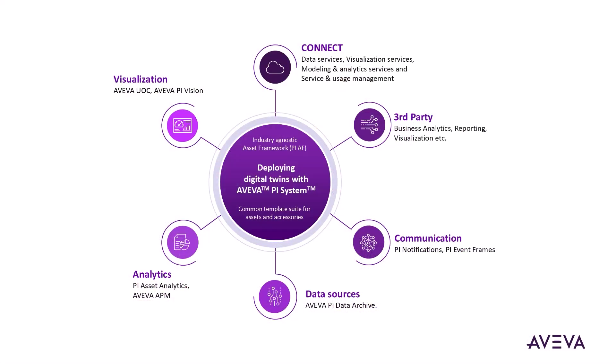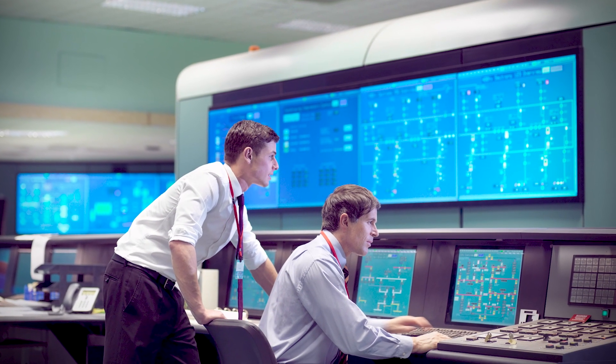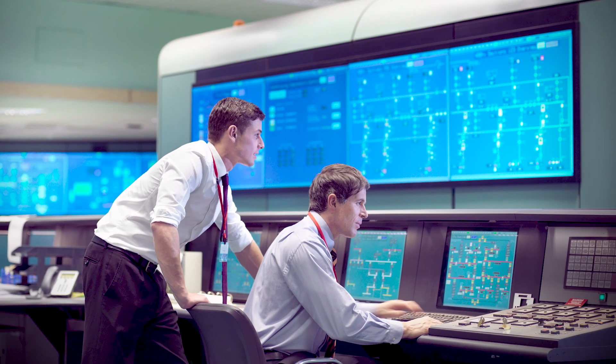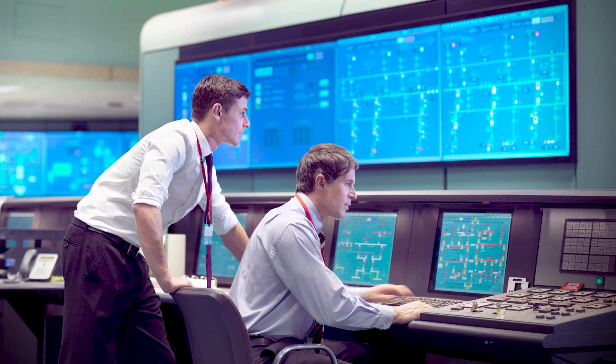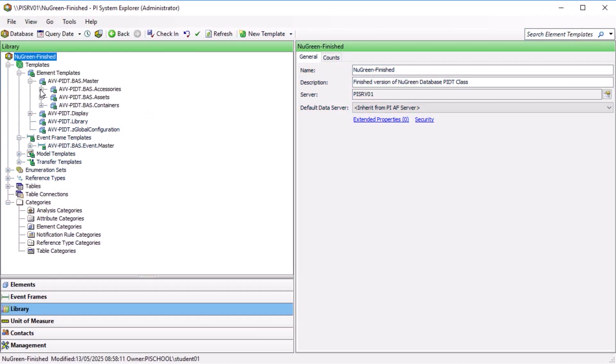But what exactly is it? Aviva Digital Twin for Pi is a digital representation of your physical equipment, built to reflect the unique behavior of each asset. It enables your teams to apply local expertise while aligning with industry standards and best practices, fostering collaboration across internal and external experts.